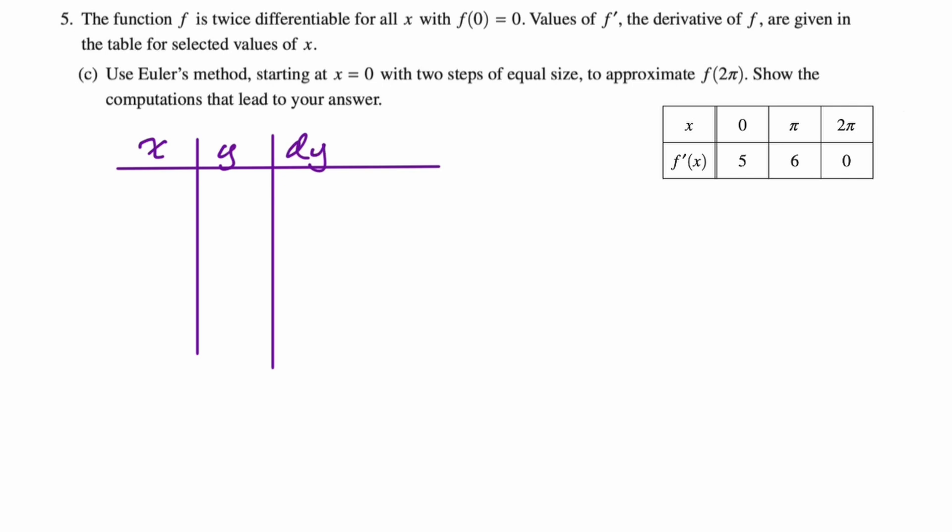When I first read this problem I forgot that f(0) is 0, so I had no idea how to start it, but at 0,0, we need to calculate our step size. We're going from 0 to 2π and we're going in two equal steps, so 2π over 2 is just π. So we have that. We can fill in all the x's: 0, then π, then 2π.